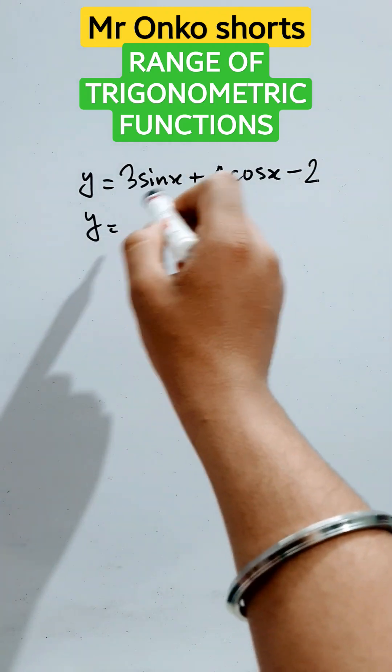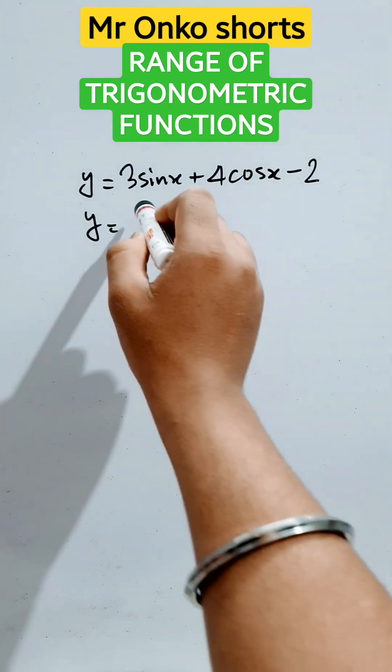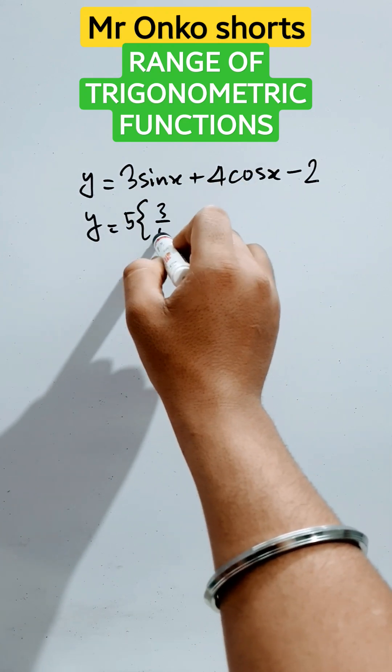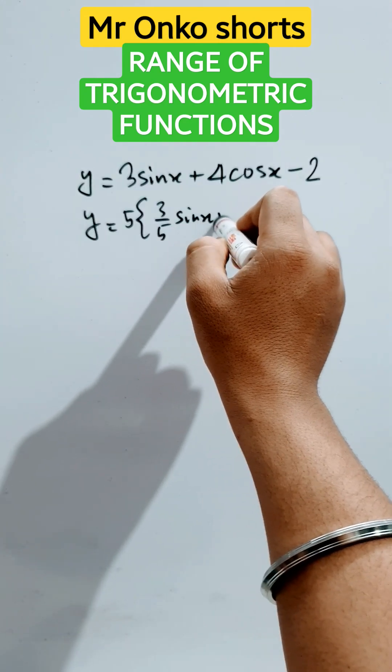So we will take common five from these two terms. It will be five into three by five into sine x plus four by five into cos x minus two.